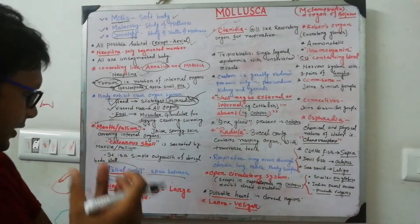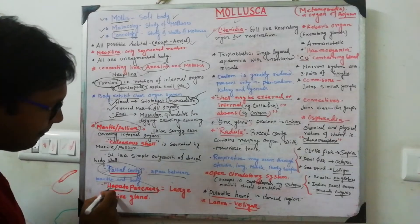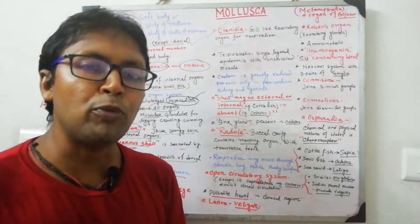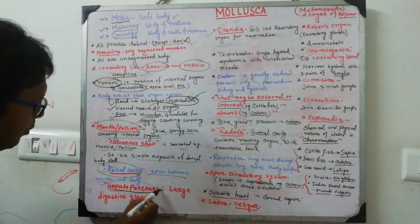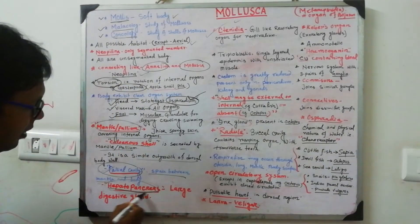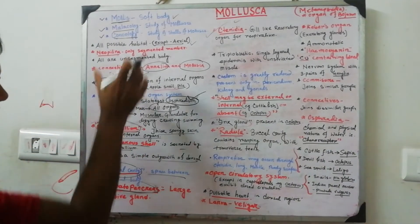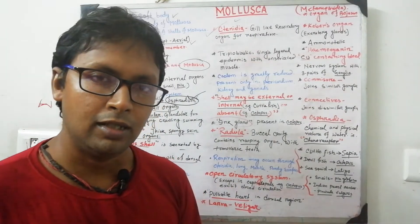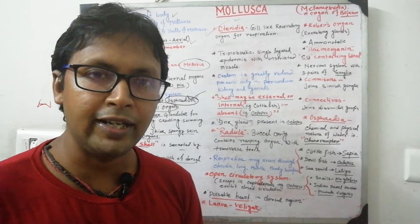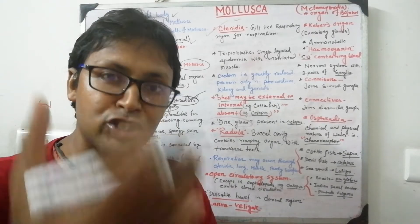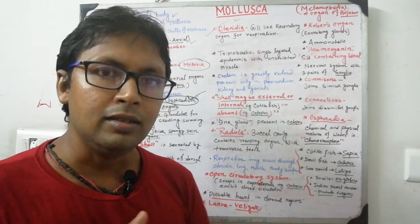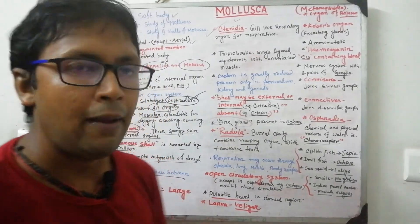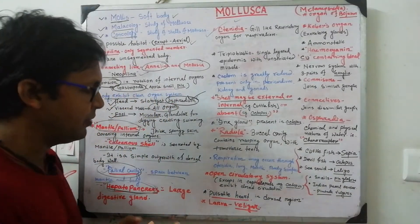The visceral mass contains a stomach region associated with a large digestive gland called the hepatopancreas. Hepatopancreas is another important and unique trait of this phylum. Key hallmark traits of Mollusca include the mantle, osphradium, calcium carbonate shell, and hepatopancreas.